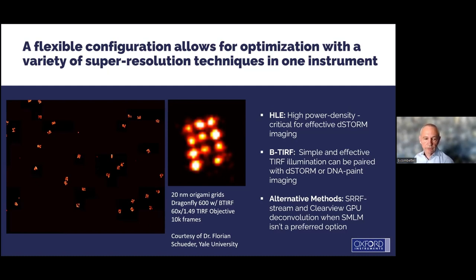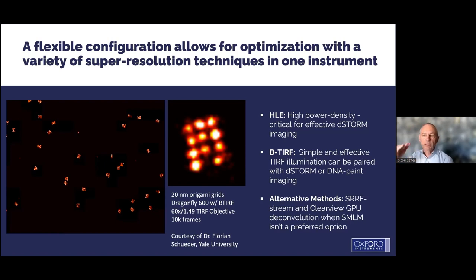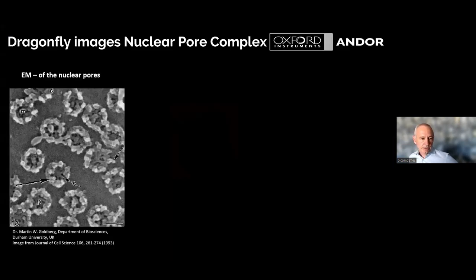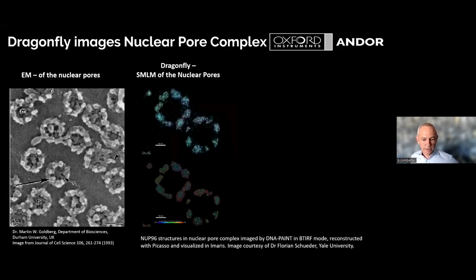This is DNA-PAINT, but you can apply this to any STORM or PALM technique for single molecule localization. The TIRF angle is adjustable, not only at 100–200 nanometers but we can increase the angle slightly and do single molecule localization in roughly half a micron volume. This is a nice example of nuclear pores using a slide prepared by a company called Massive Photonics — with the Dragonfly, we were able to resolve individual subunits of the nuclear pore complex.